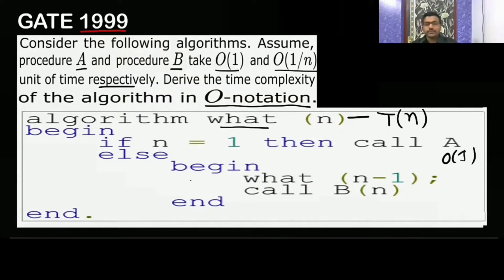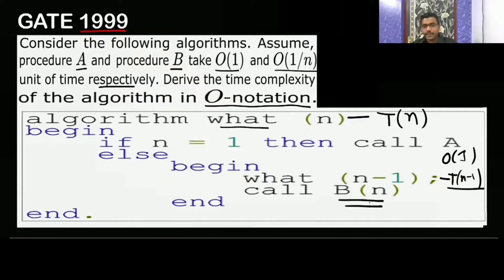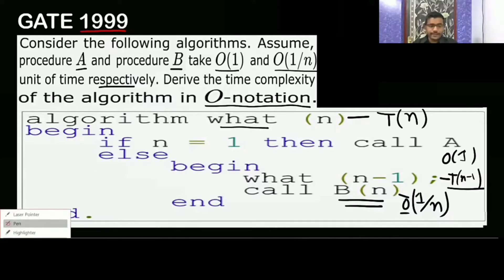In the else case, it makes a recursive call. When the size is n it takes T(n), so when the size is n-1 it takes T(n-1). After that it calls procedure B(n), and B(n) takes time 1/n. So the else case contributes T(n-1) plus 1/n.